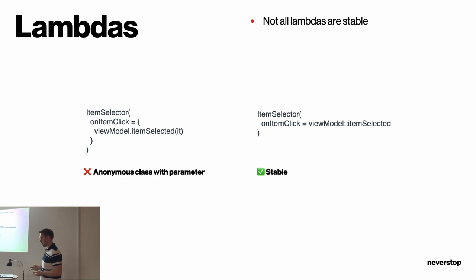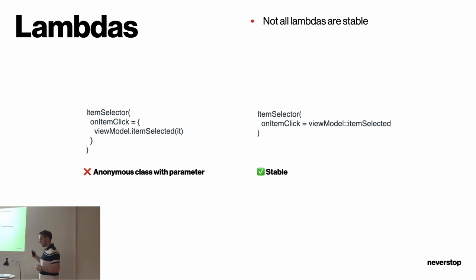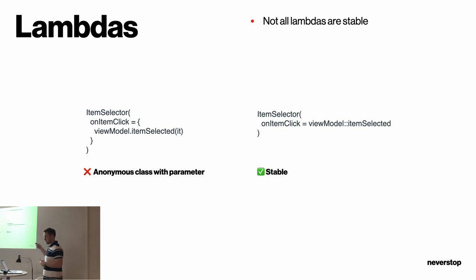What about lambdas? Not all lambdas are stable. For example, when you pass a new model captured from outside into a lambda, this code will be compiled into an anonymous class with a parameter, and on every recomposition the compiler will think it's a new parameter and force a recomposition. One solution is to use the function reference style of lambda if you have just one parameter and it matches. Sometimes it's readable, sometimes it's not, or not even possible.